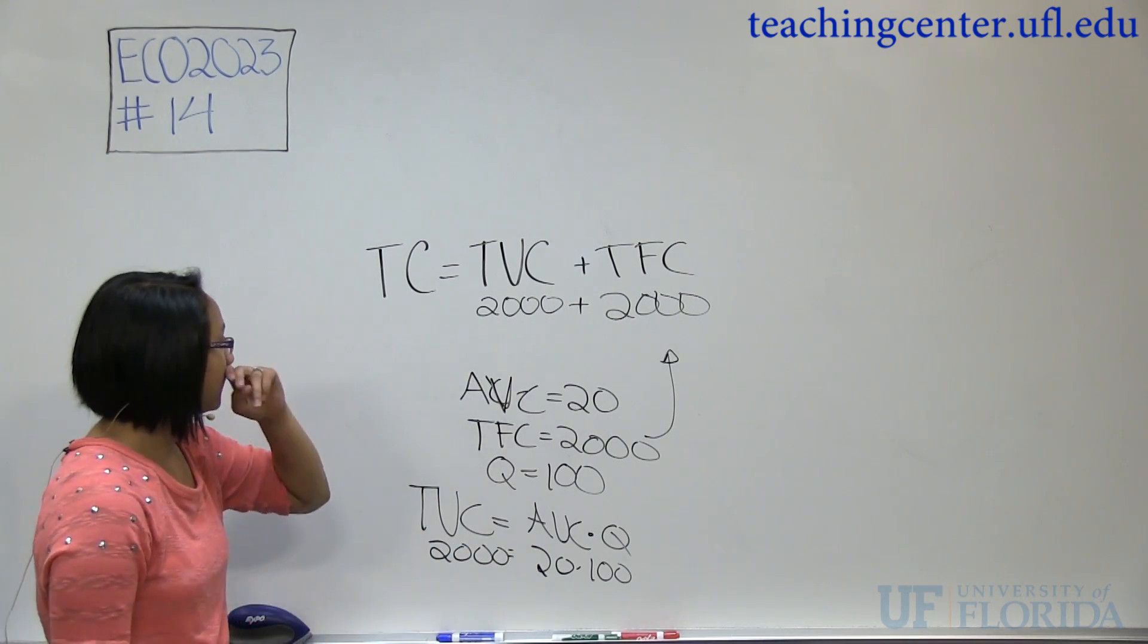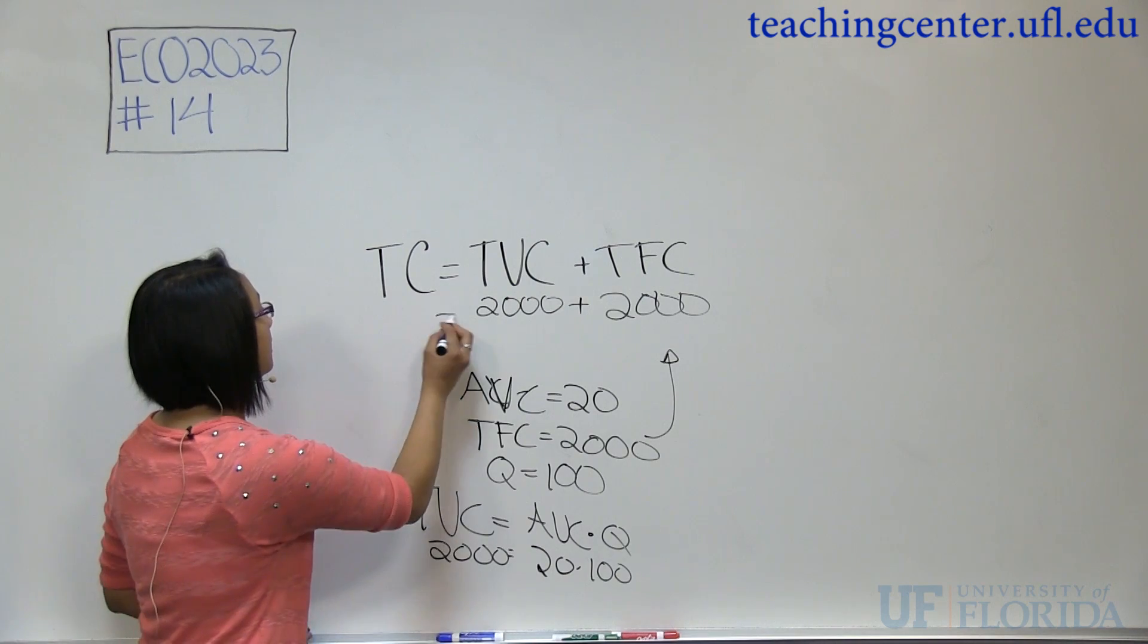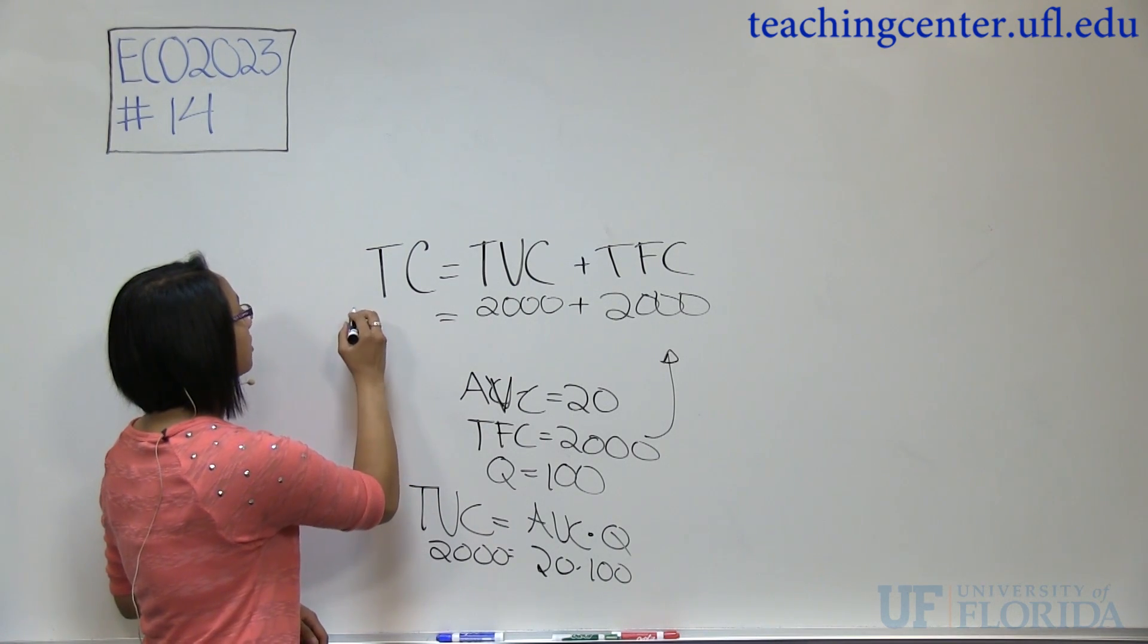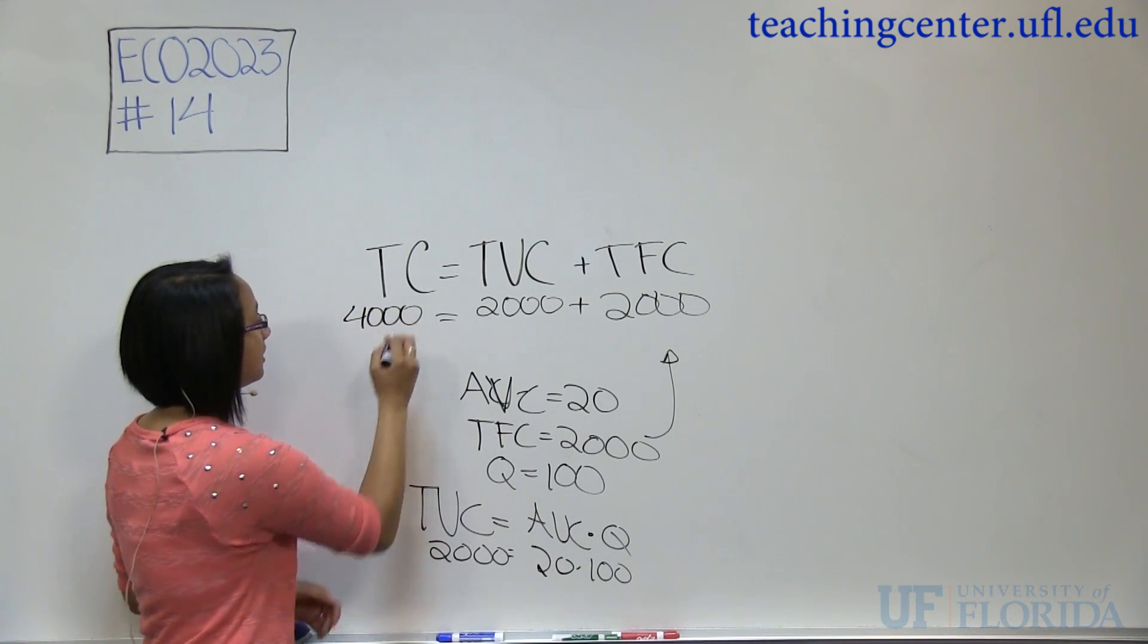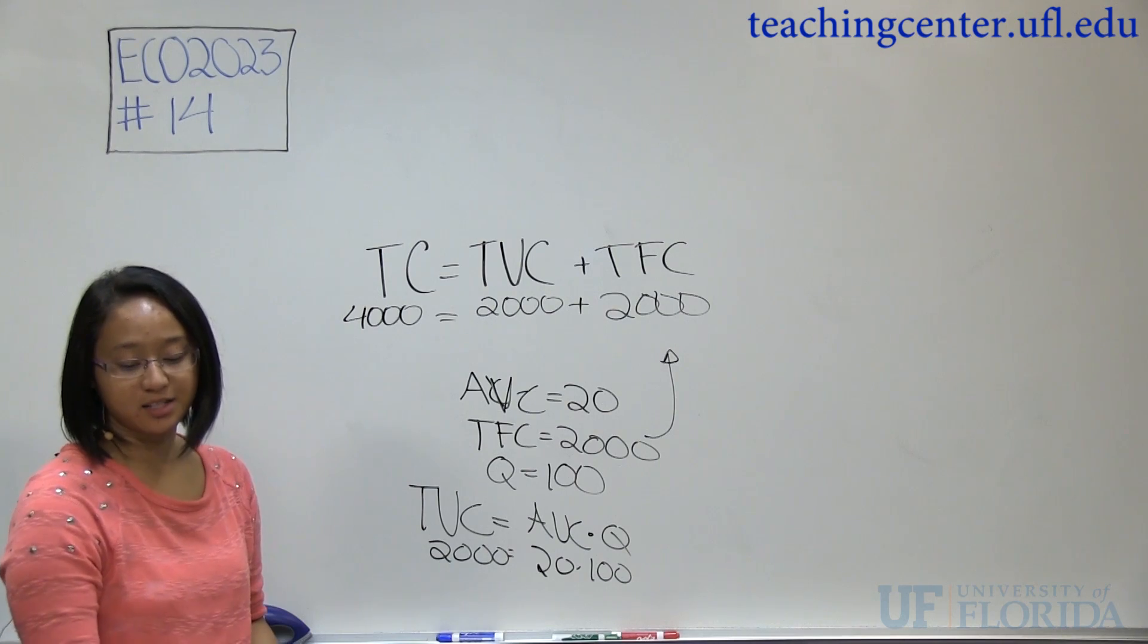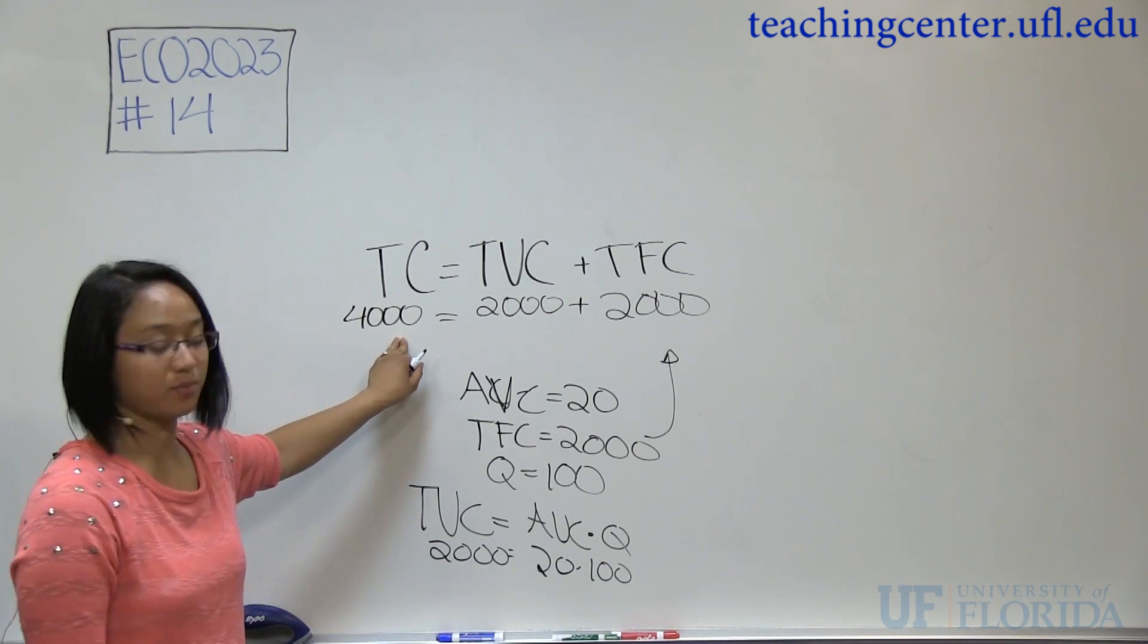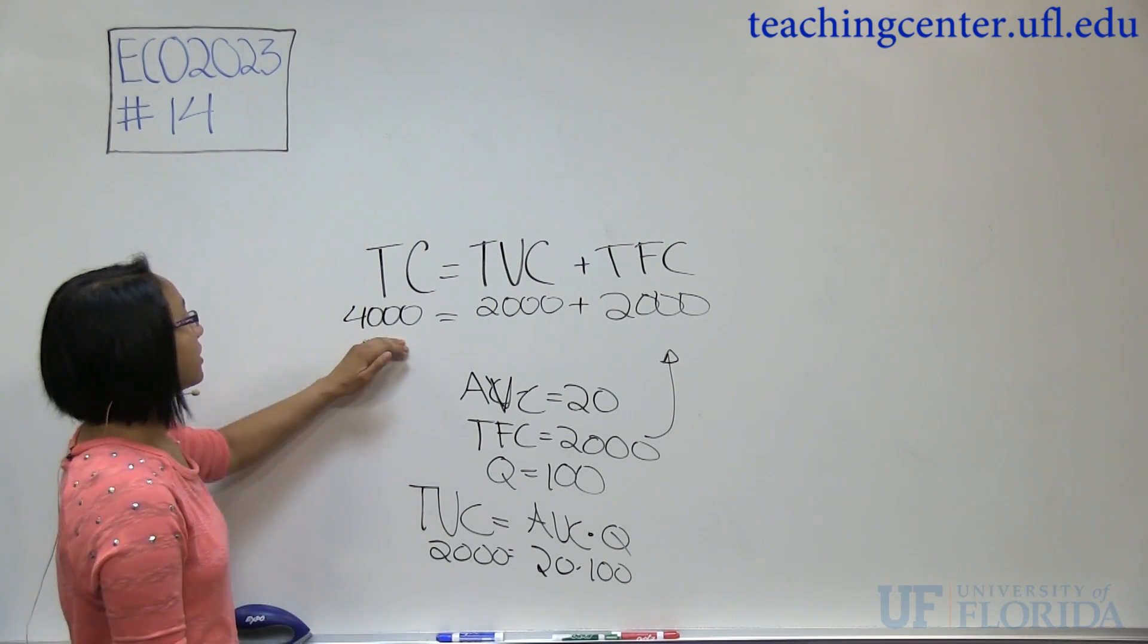So we find TVC, and we found TFC. So our TC becomes—our total cost is 4,000. So the answer here is D, 4,000.